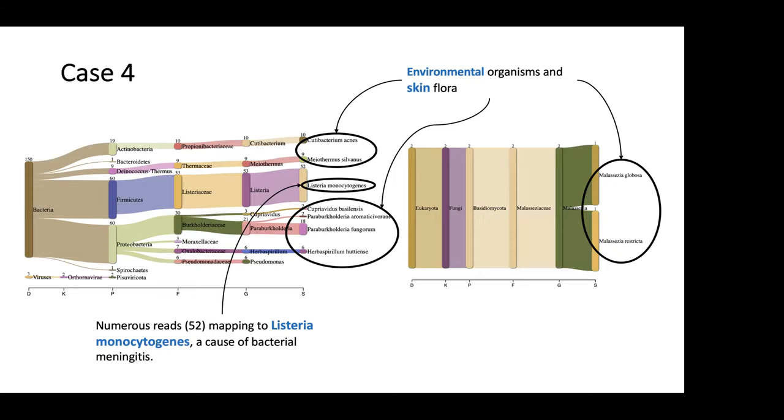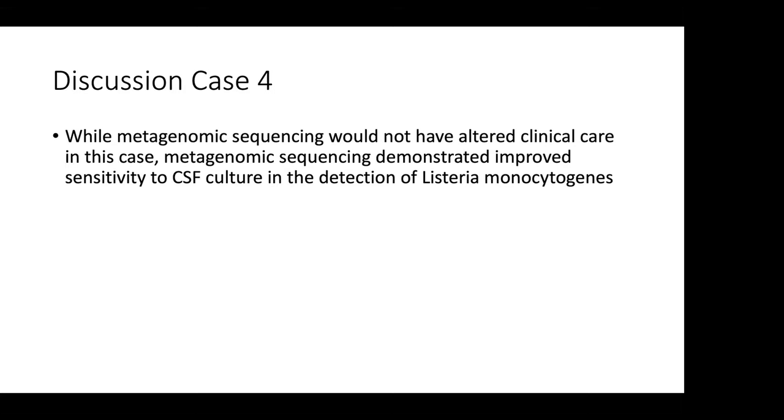On the bacterial and viral database comparison we found, lo and behold, Listeria monocytogenes with quite a lot of reads, numerous reads mapping to Listeria. Based on the number of reads and the mapping to that genome, this would be much more definitive than for example the Treponema pallidum in the previous sample. While in this case metagenomic sequencing would not have altered clinical care, what is significant here is that the sensitivity was improved over CSF culture in detection of Listeria monocytogenes and would have been useful had we not had a reflex PCR because our blood culture initially called it Listeria innocua.